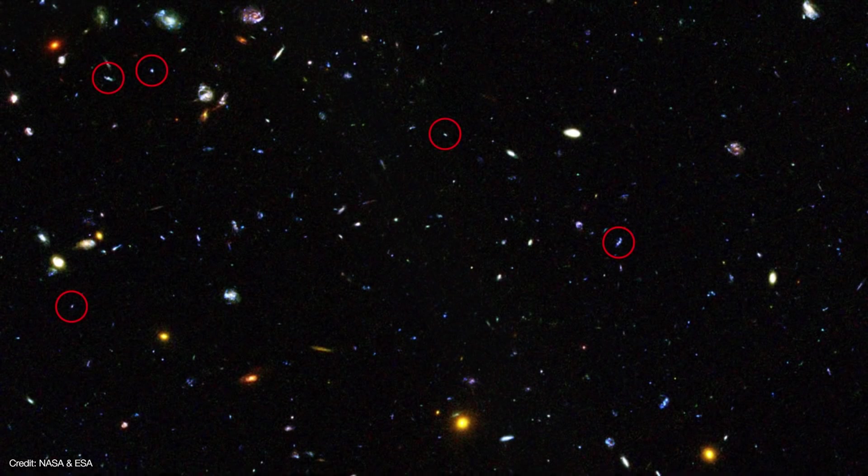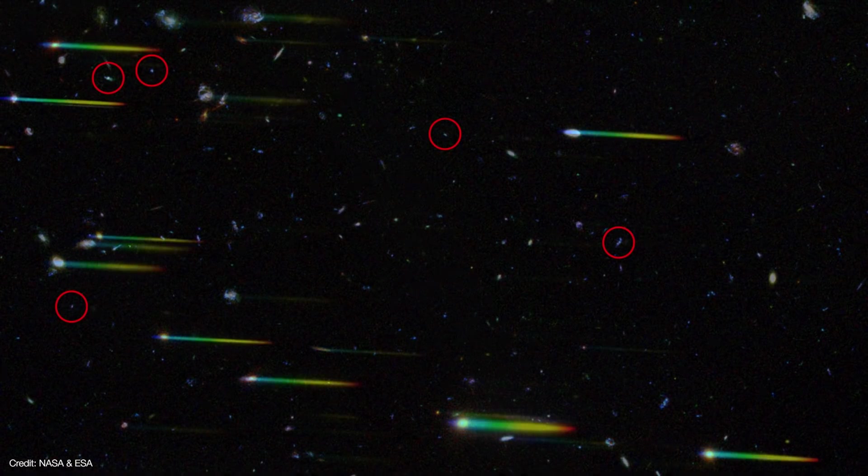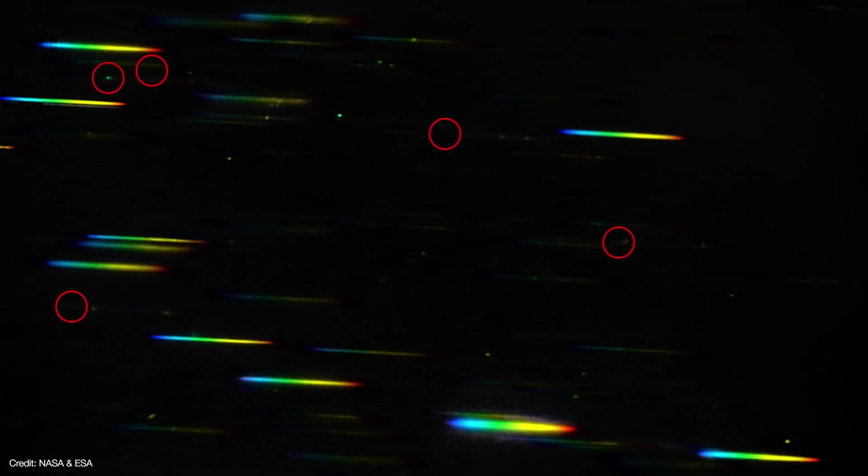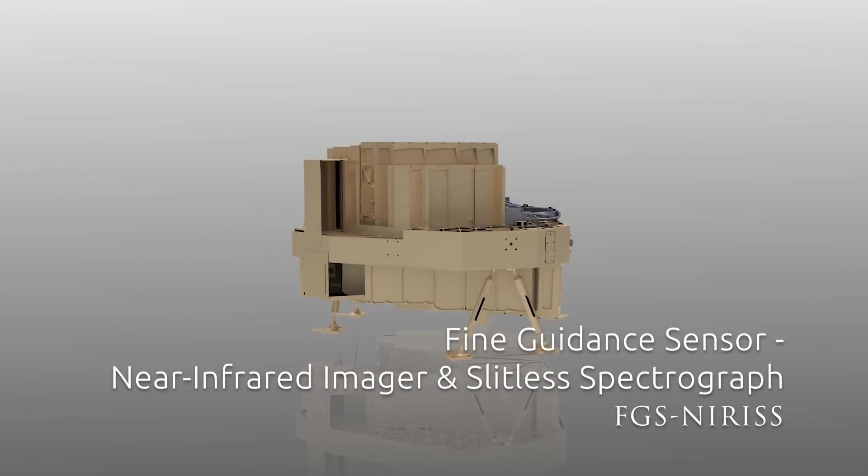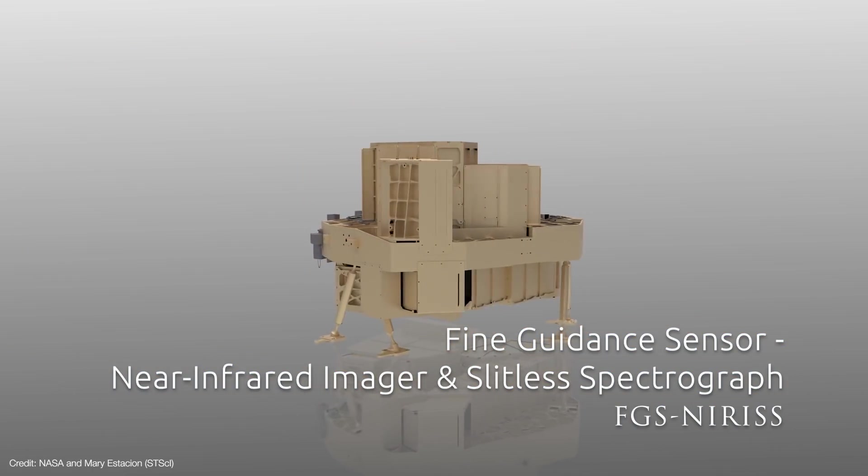There's about 250,000 micro shutters. So tiny portions of each field can be precisely targeted while blocking everything else. And this allows NIRSpec to take the spectra of up to 100 targets simultaneously without risking contamination from the background or other objects in the field.